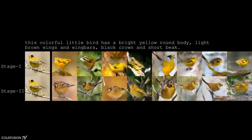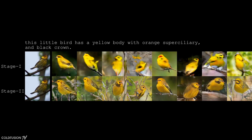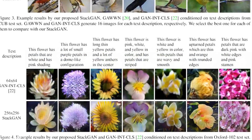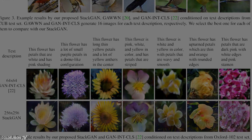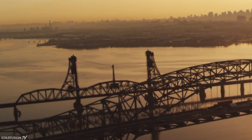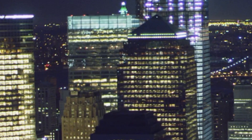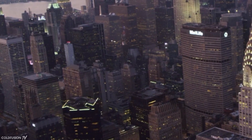Today, we'll be looking at another interesting AI. Imagine typing a descriptive sentence of a scene and having an artificial intelligence generate a convincing photorealistic image just from your text input. This has just been created and it's what we'll be taking a look at today. After this, I'll share some of my wider thoughts on artificial intelligence.